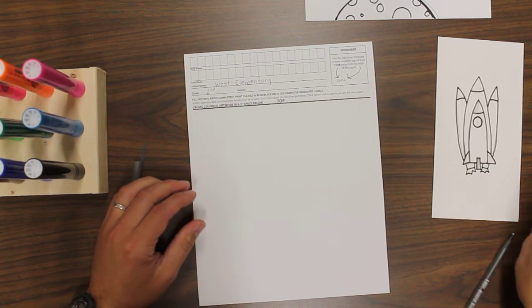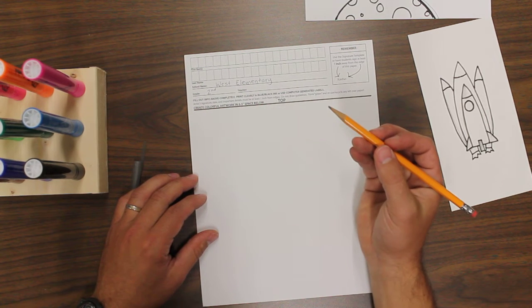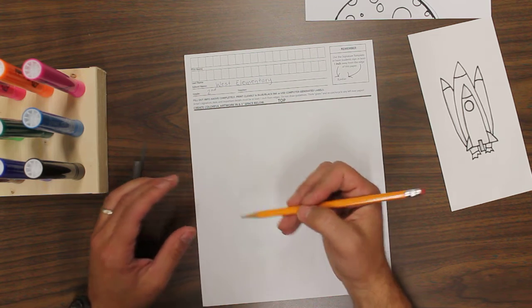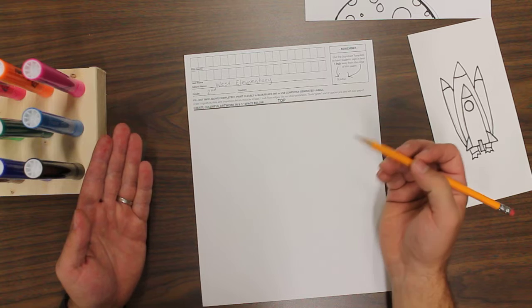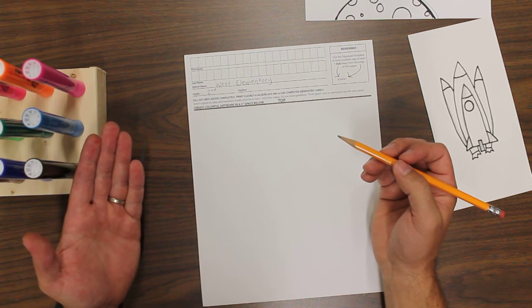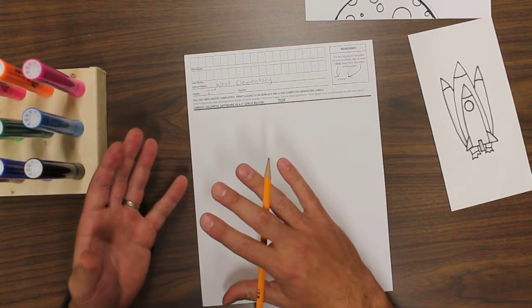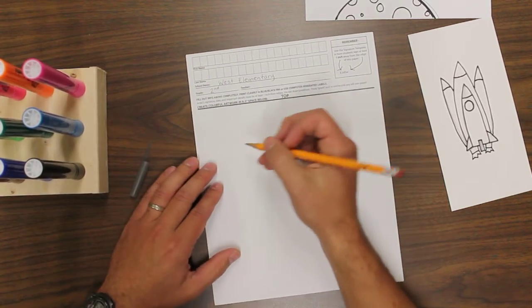When you get started with your planets, I want you to take a pencil and you're going to be drawing four to six planets on yours, four or five or six. That's a good number to have. And I want you to vary the size of them. So you want to have some that are small, some that are medium, and then also some that are large.